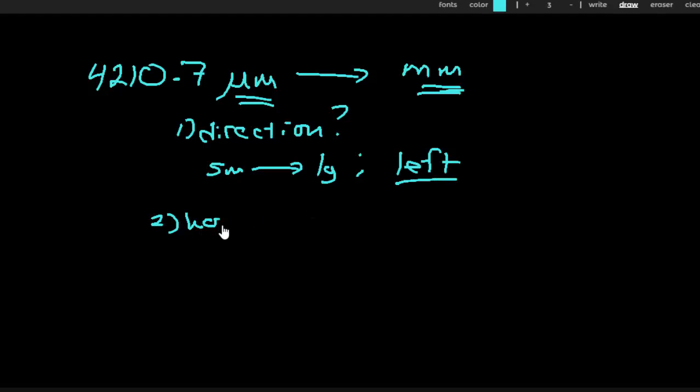Second question is how many spaces? So again, I'm going to take a look at my number line. And I'm going to count from micro to the base unit. That's six spaces. But I'm not going all the way up to the base unit. I'm actually stopping three spaces early at millimeter. So there is a total of three spaces between micro and milli. And so that means I'm going to move my decimal point three spaces to the left.